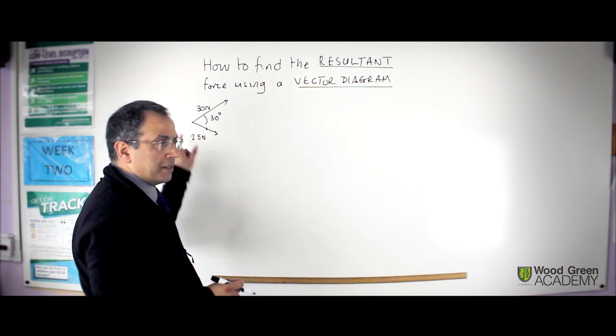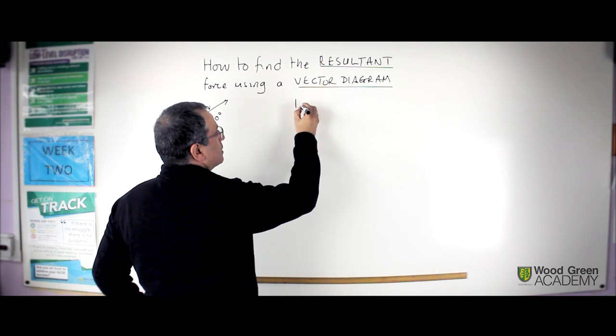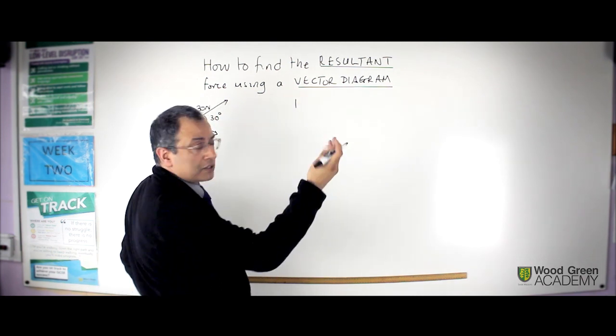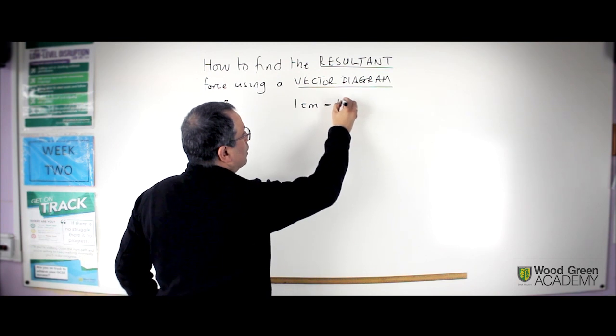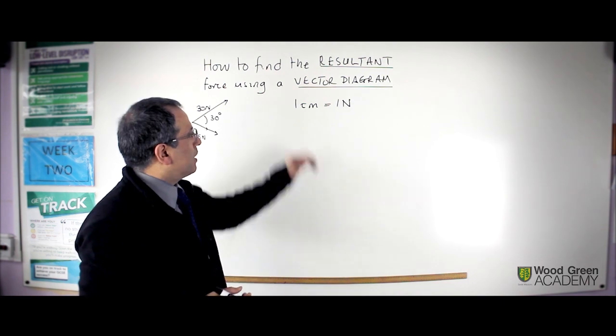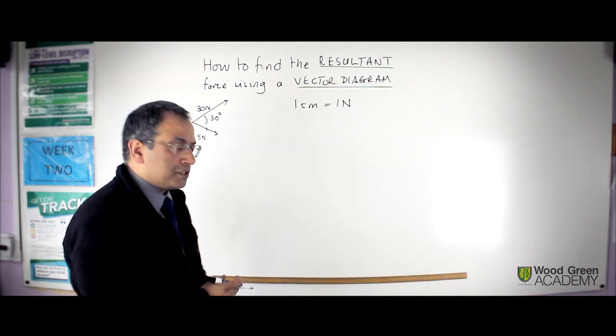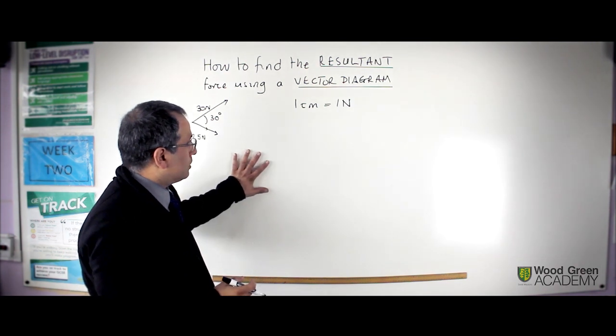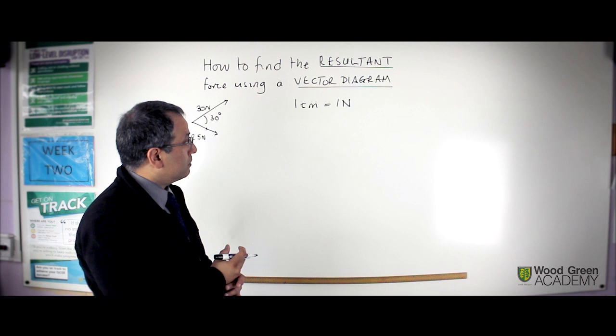So, before we do anything, we need to decide on a scale. And let's just suppose for convenience, we'll say 1 cm is equal to 1 N. Now, this scale does need to be a sensible scale. I'm using this scale because I can get a fairly large diagram on the actual board. But on paper you may use a smaller scale.